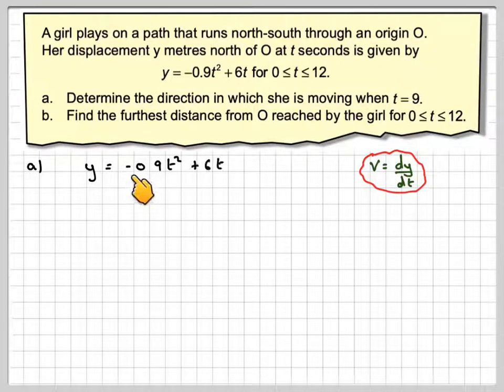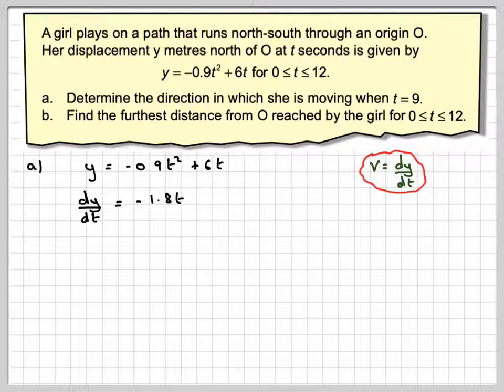If we've got y equals minus 0.9t squared plus 6t, if we now differentiate that, we get dy/dt, which is v. So we're going to get 2 times minus 0.9, which is minus 1.8t. Then if we differentiate 6t, we get 6.